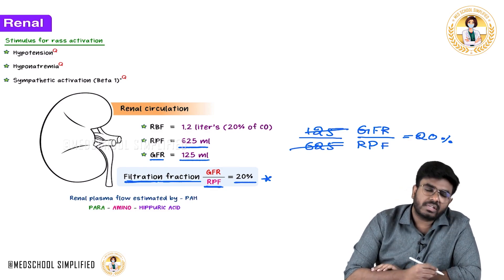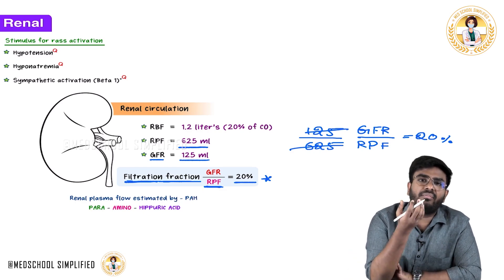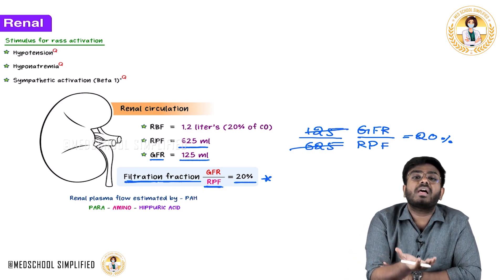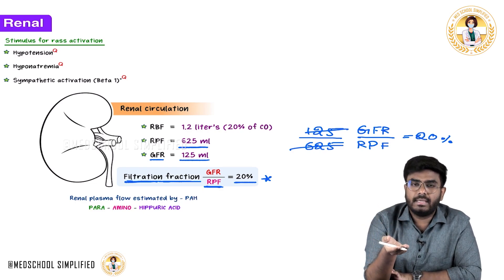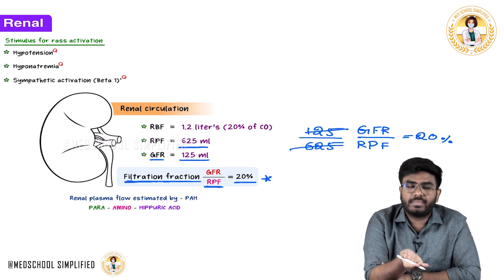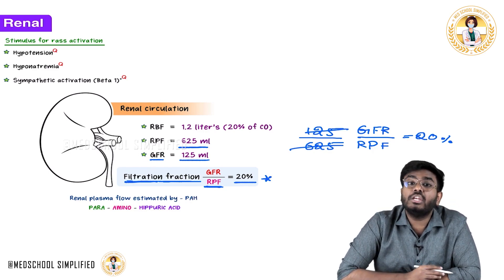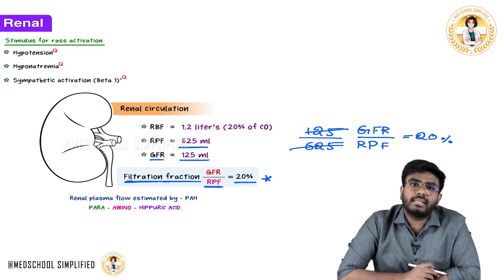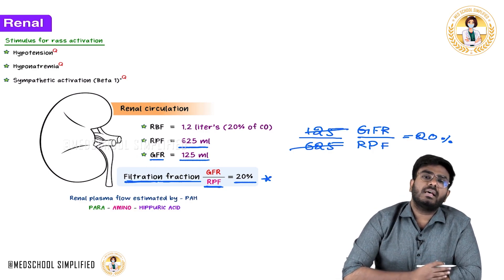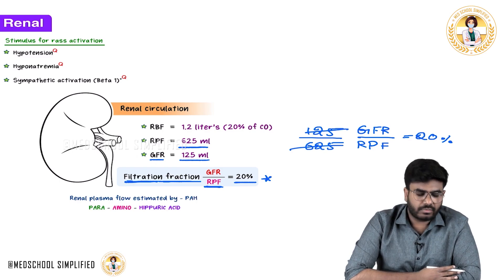In the same way, GFR is 125 ml per minute — that is, every minute 125 ml of plasma is filtered in the nephrons. To calculate GFR, you need certain markers. The marker of GFR is inulin — not insulin, inulin — along with creatinine and cystatin C. All these are markers for GFR estimation.